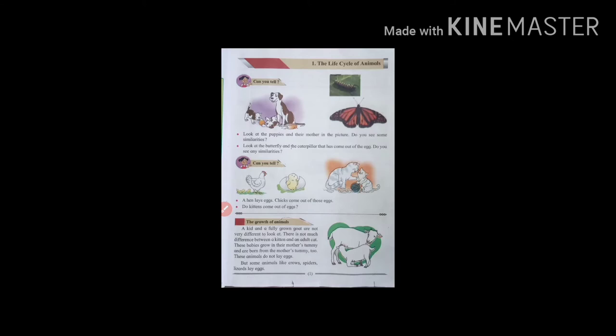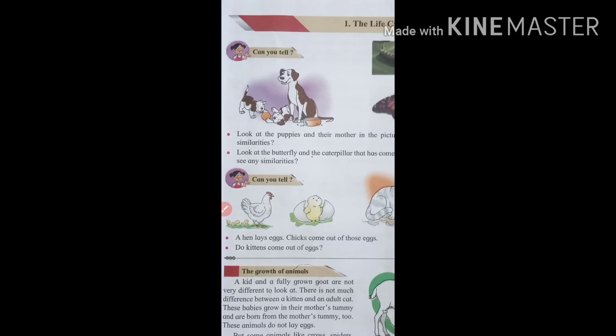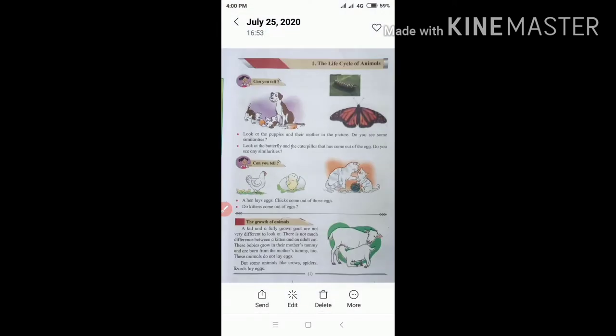In the picture we are going to see the dog and puppies. We are going to see the similarities in the body. This is the nose, eyes, legs, tail. These are similarities. Look at the butterfly and the caterpillar that has come out of the egg. Do you see any similarities?